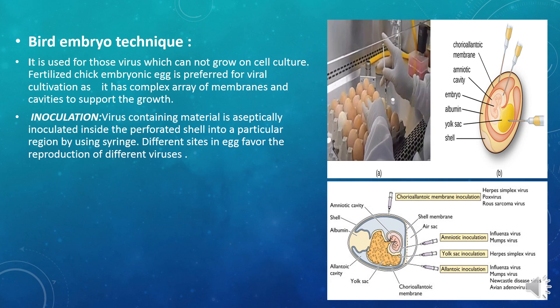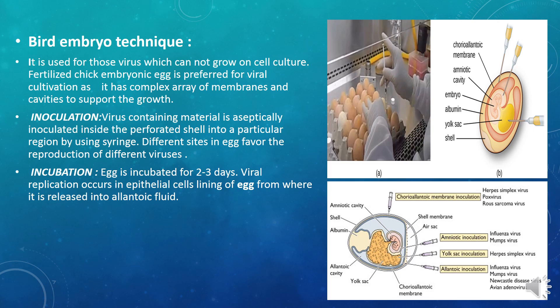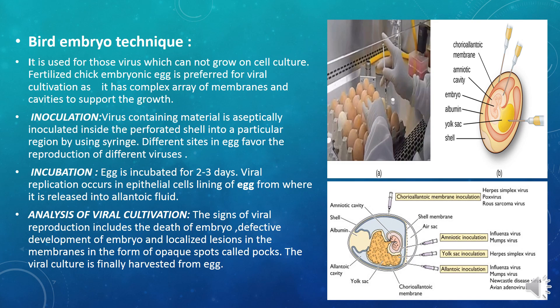In the yolk sac, herpes simplex virus is inoculated. After inoculation, the egg is incubated for 2-3 days, during which viral replication starts in the epithelial cell lining of the egg, from where the virus is released with allantoic fluid. After incubation, we analyze the egg to assess how much viral cultivation has occurred. There are three signs: embryo death or defective/abnormal development; localized lesions (cracks) on the embryo membranes appearing as opaque spots called pocks; and the viral culture emerging outside the egg shell — the shell cleaves and the embryo comes out with the virus culture on it.